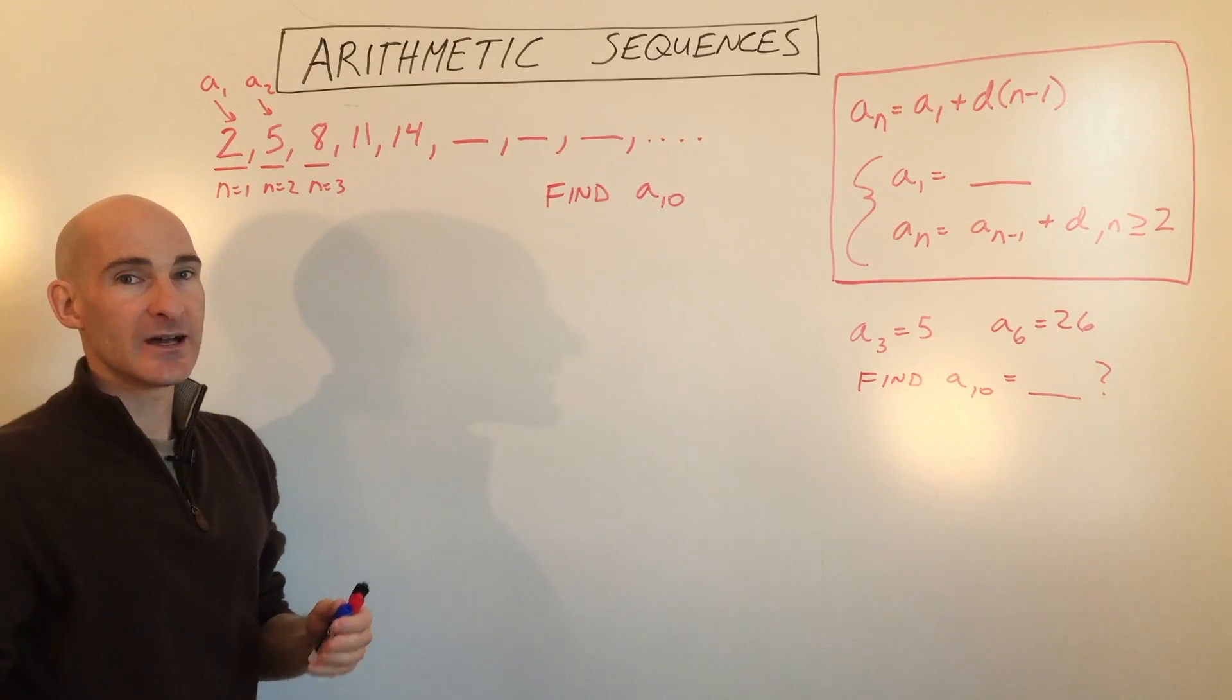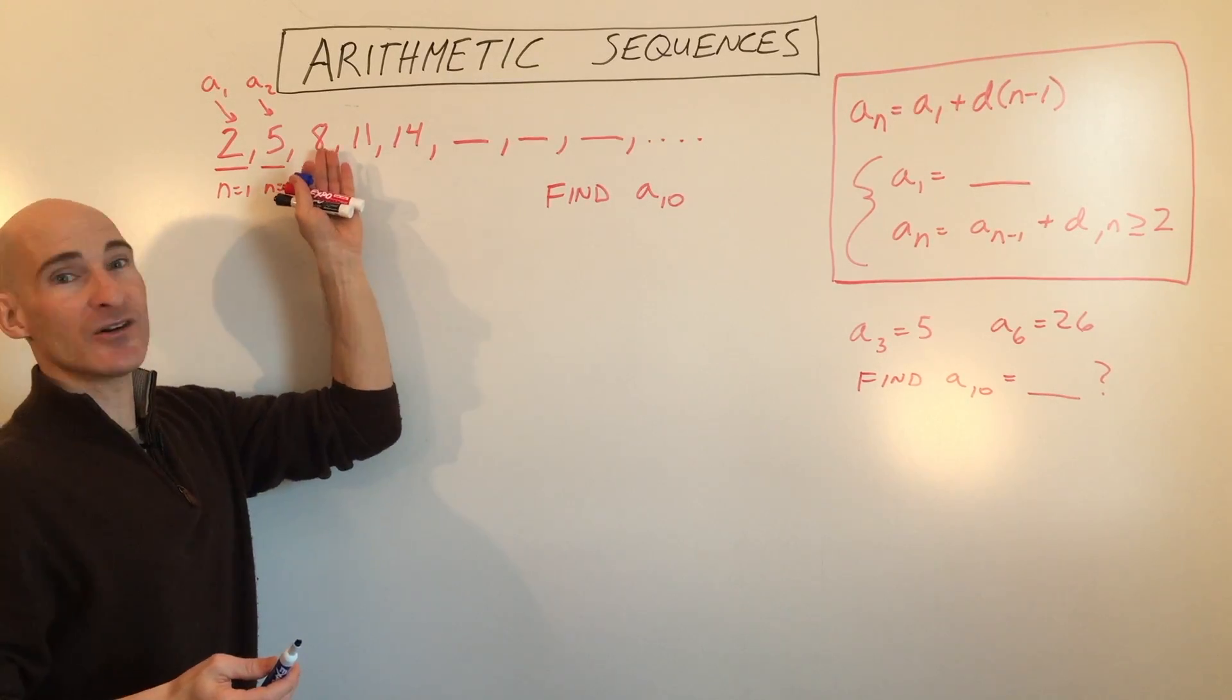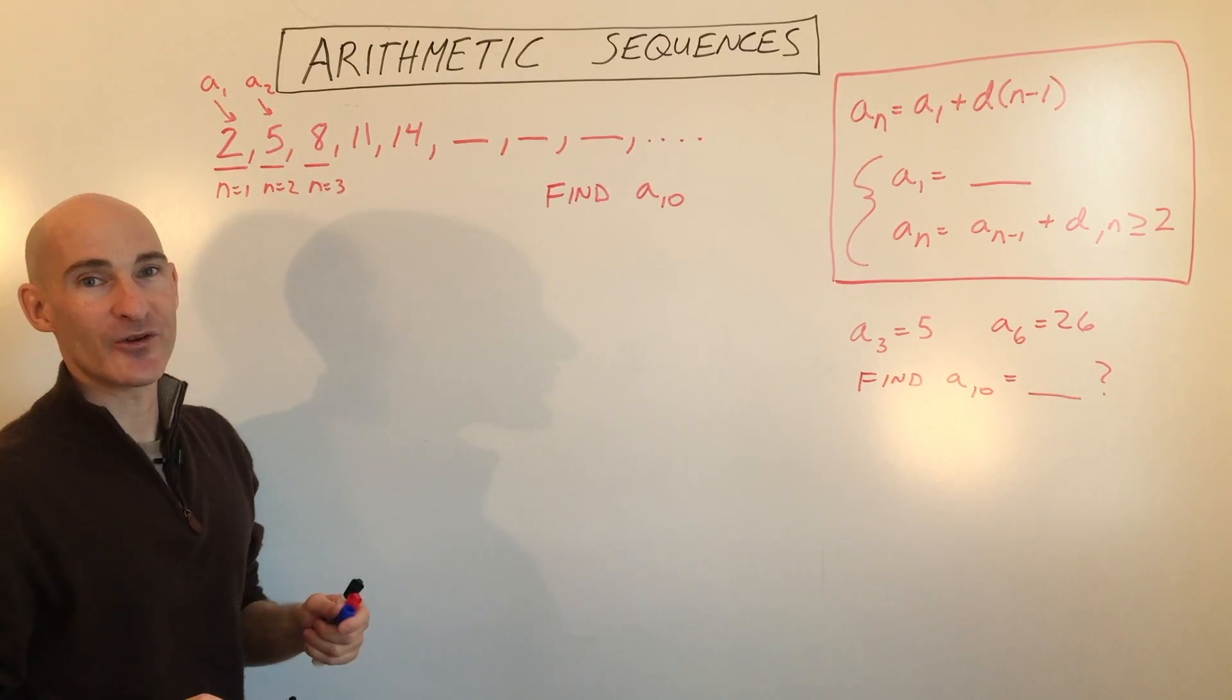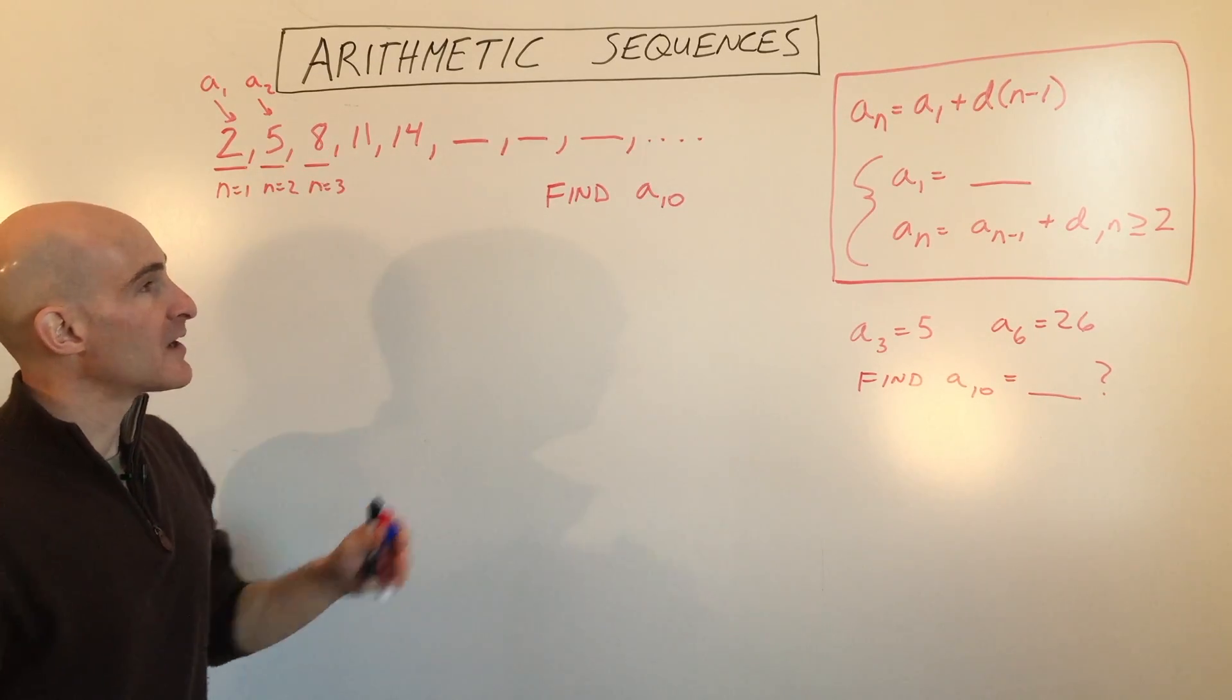So it's kind of like a batting order, like say somebody's batting third, but who is that? Oh, it's Joe, for example, right? So that's the term, but this is the value of the term.